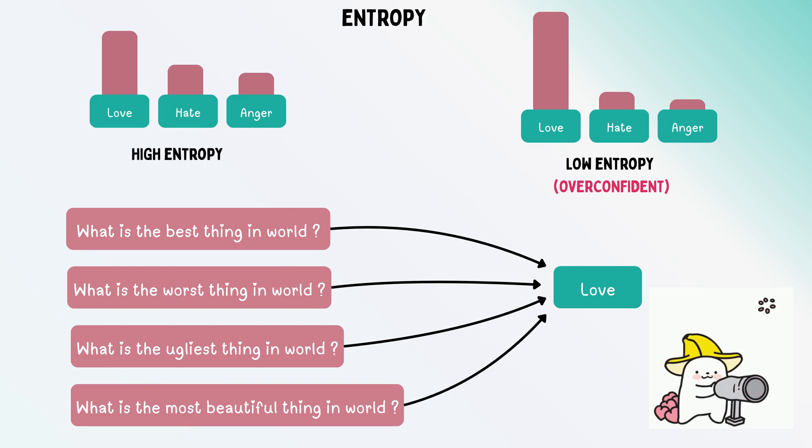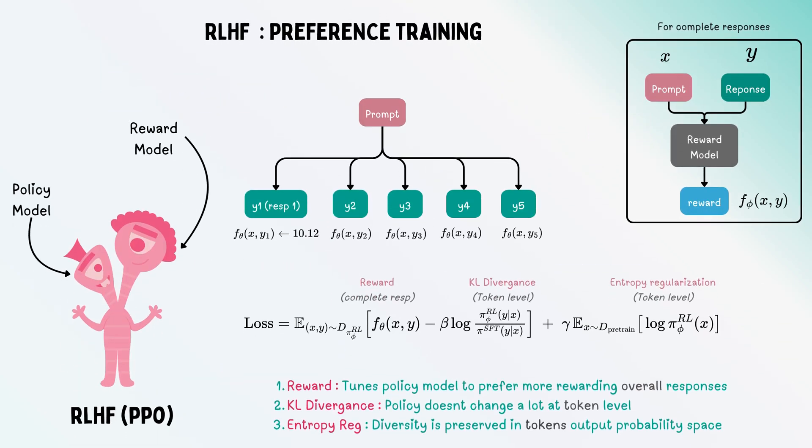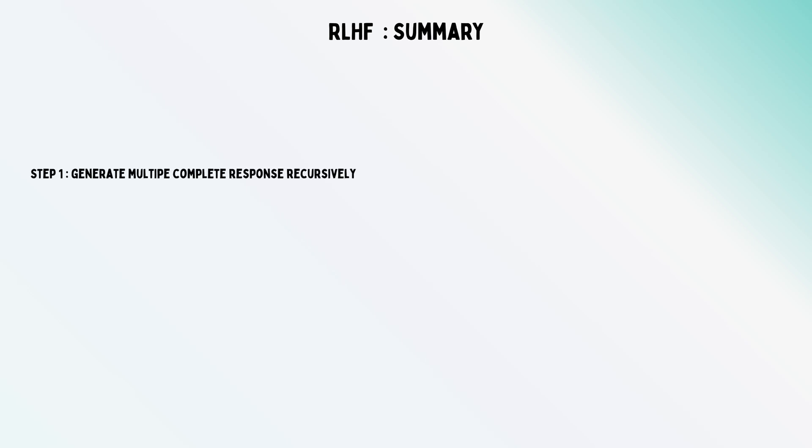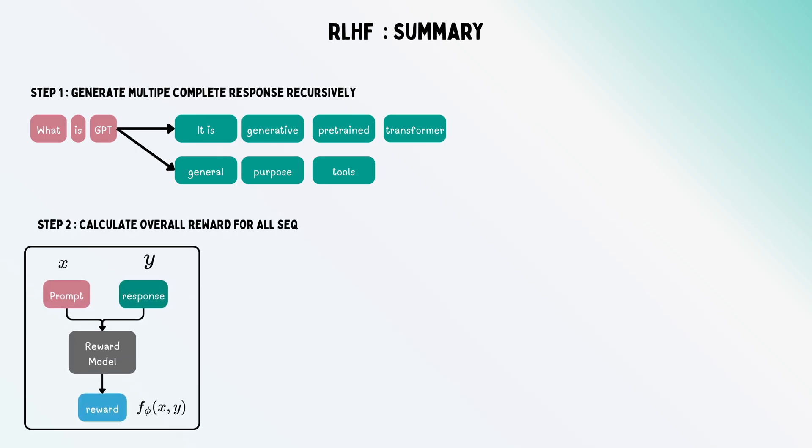This is an age-old problem with reinforcement learning. By adding KL divergence and entropy regularization, we do preference learning. To summarize: first, we let it generate multiple responses. Then we train the reward model where, given a prompt and preferred response, it learns to predict the reward.